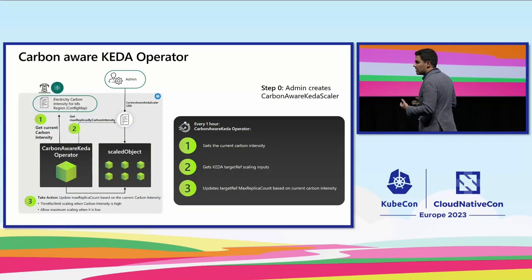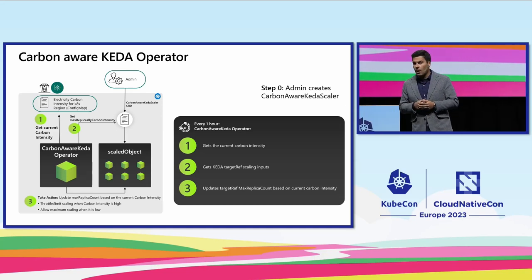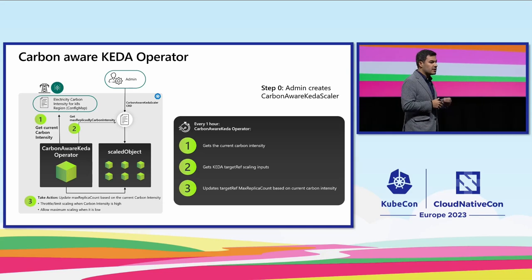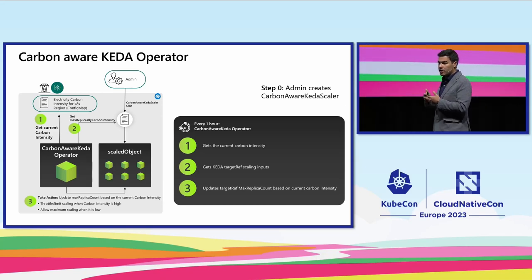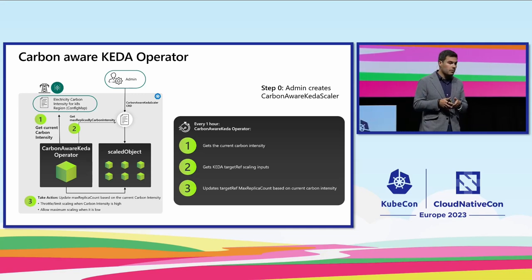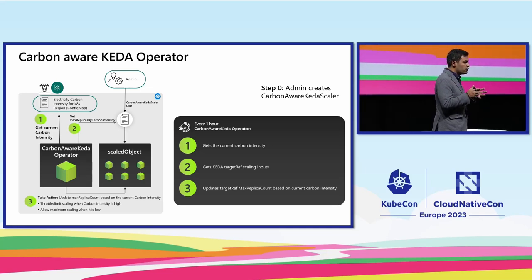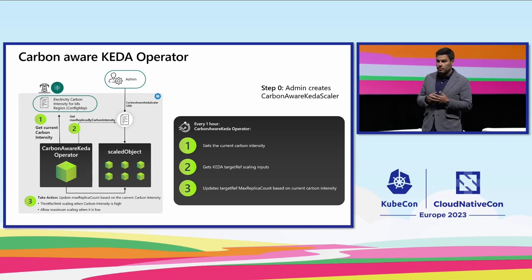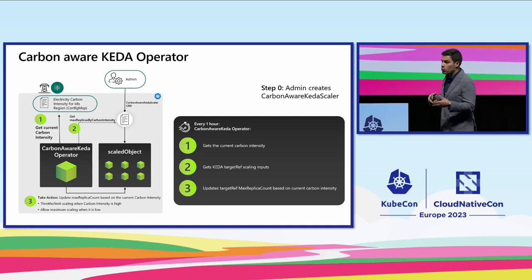Okay, so we know what carbon intensity is. What does that mean for Kubernetes and our cloud-native workloads? Well, that is where the Kubernetes event-driven autoscaler comes in. KEDA is essentially an incubating project in the CNCF, and we have been creating a carbon-aware scaler for KEDA. The carbon-aware scaler's main idea and principle is that we are going to be able to use a concept called demand shaping — scaling your workloads based on the carbon intensity of the infrastructure where they're running, for example, the region of a cloud provider.